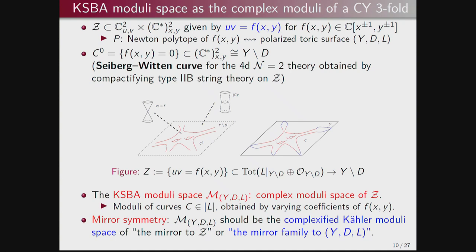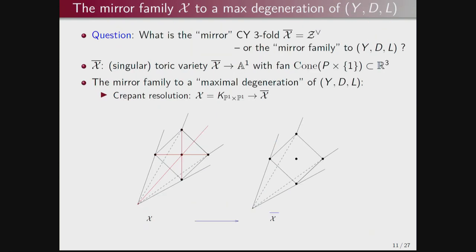In physics language, this curve is often called the Seiberg-Witten curve for the 4D N=2 theory obtained by compactifying Type IIB string theory on Z. Mirror symmetry then suggests that the complex moduli of Z should be the same as the Kähler moduli space of the mirror of Z — which we often call the mirror family to (Y, D, L) since Z is naturally associated to the toric variety.